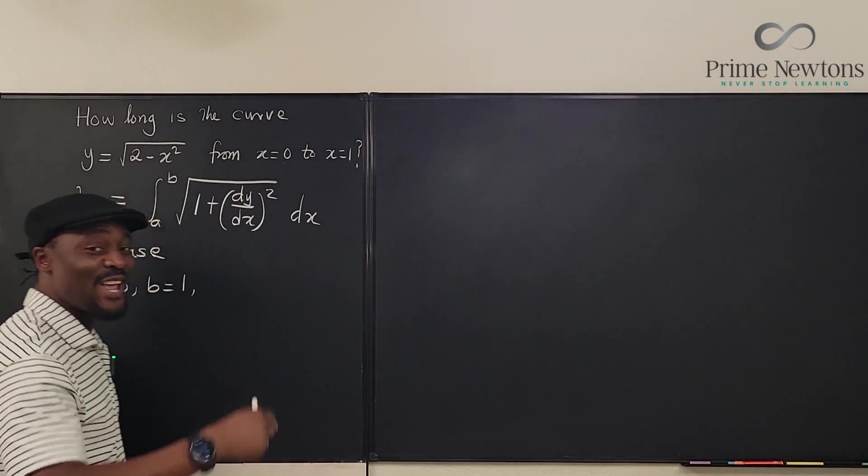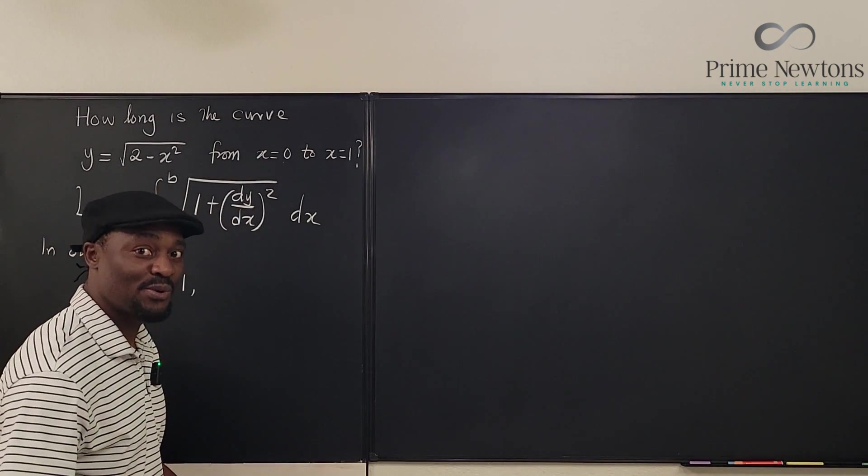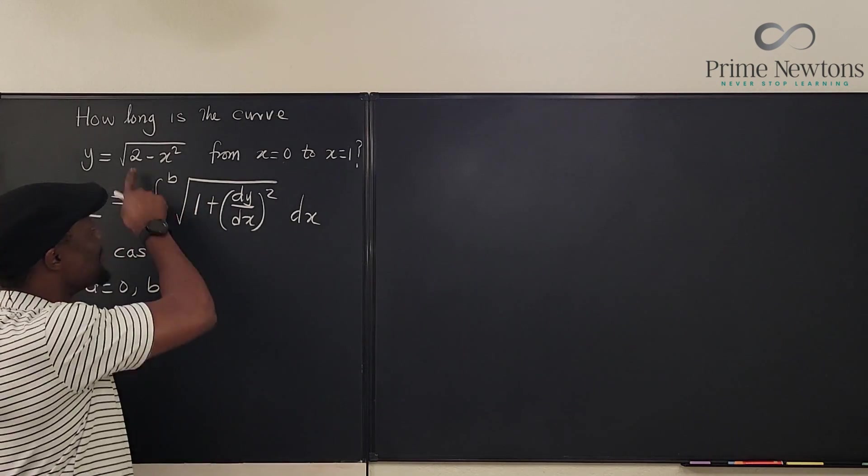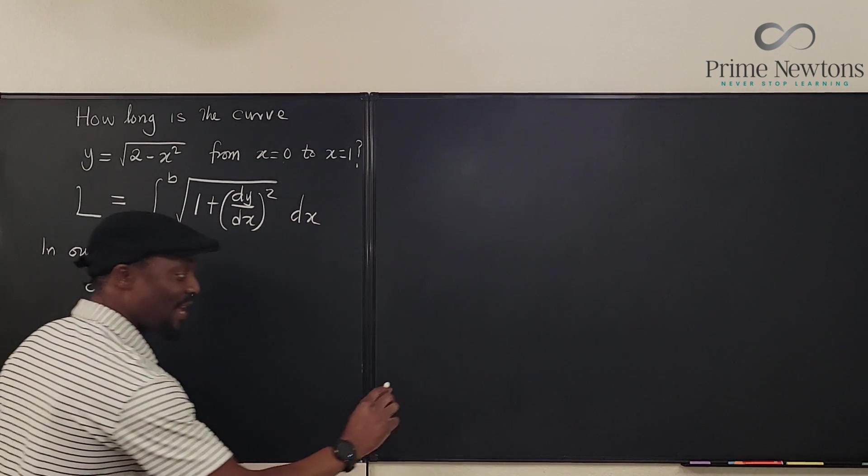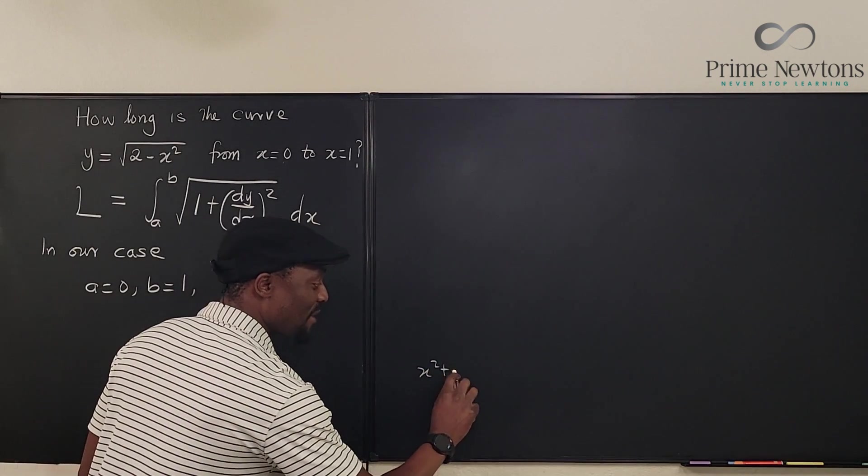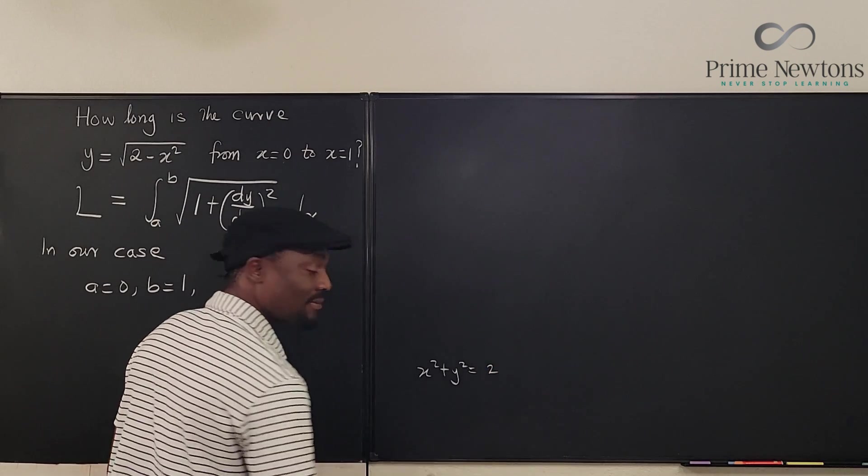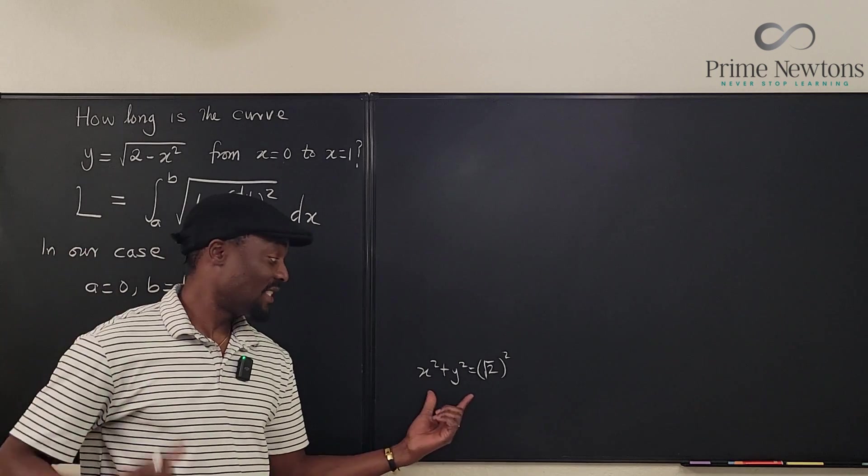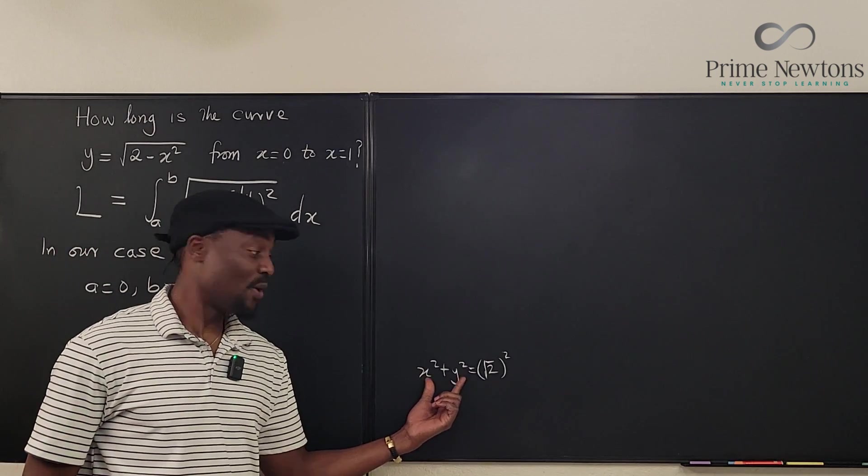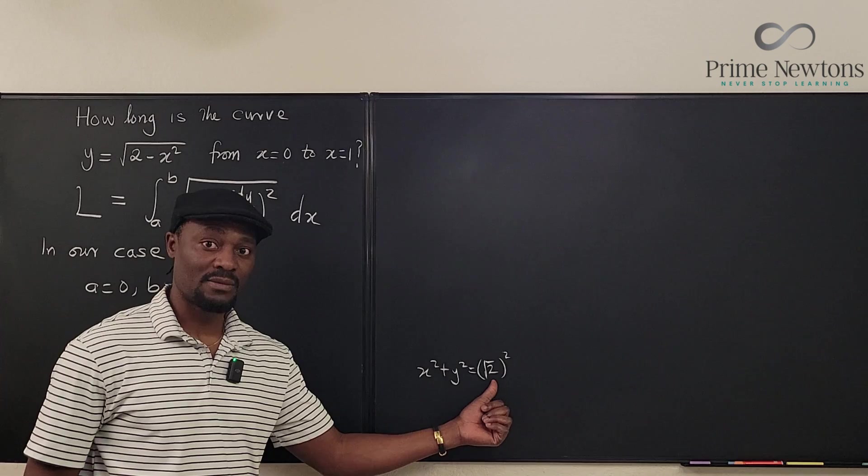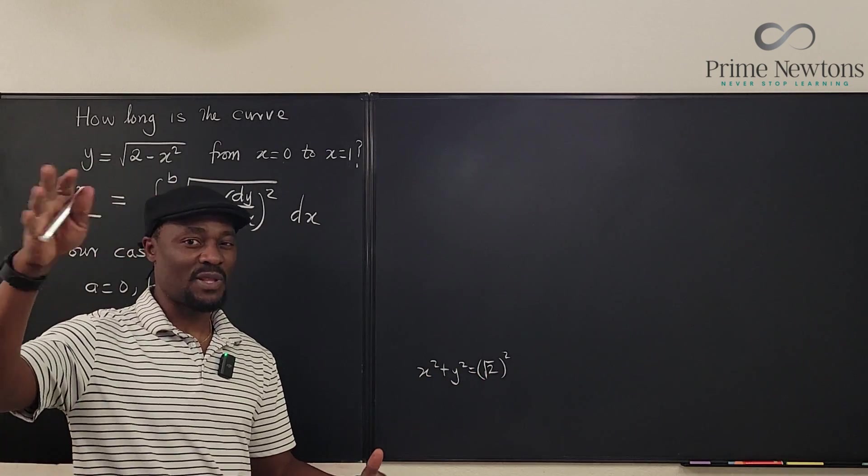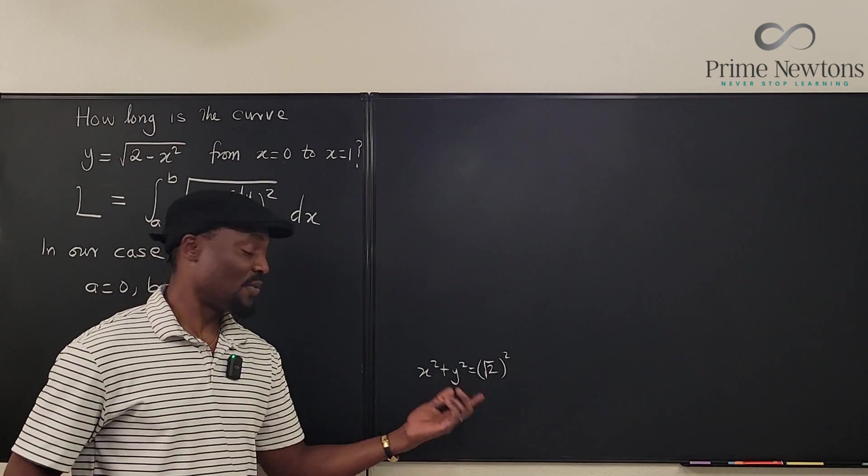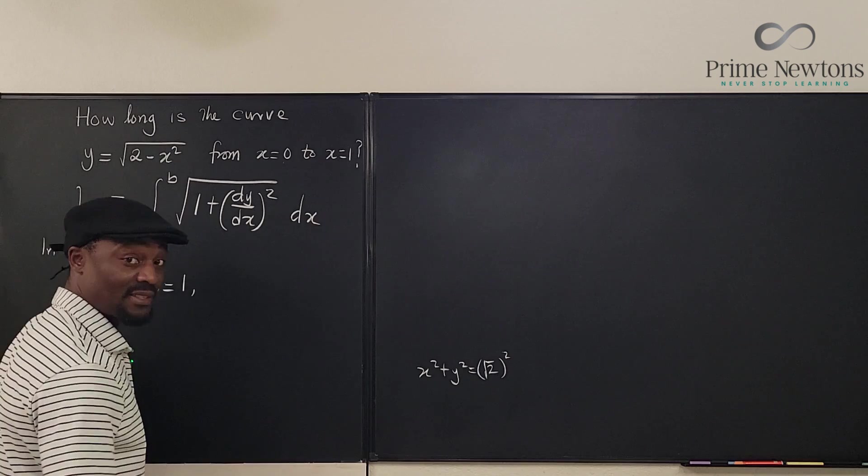You try squaring both sides. You're going to get y² equals 2 minus x². Move the x² to the other side, you'll end up with x² plus y² is equal to 2. Look, the square root of 2 squared. So this is actually a circle centered at (0,0), the origin, with radius square root of 2. So when we're done, we can always test whether our answer is correct because we can tell how much of the circumference of the circle we have. So we're going to come back to this.